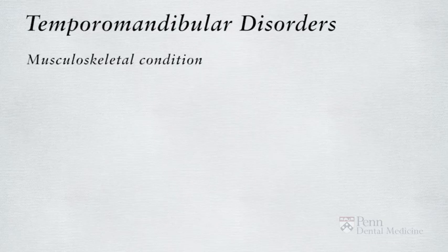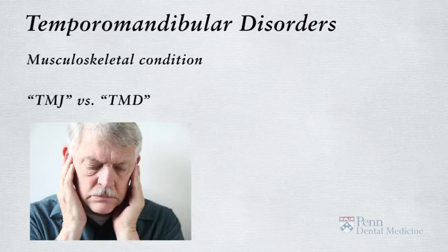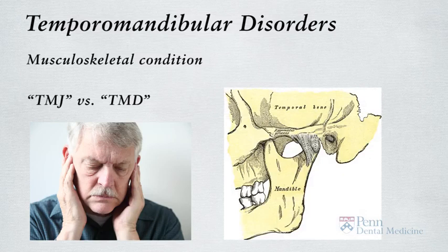TMDs are considered to be a musculoskeletal disorder. It is important to understand the terms TMJ and TMD. Many patients who have pain, clicking sounds, and dysfunction associated with their jaw joint will say they have TMJ. The term TMJ is used inappropriately, as it identifies an anatomical structure, much like saying I have an ankle, knee, or elbow. The more appropriate term is TMD, which reflects a disorder affecting any or all components of the TMJ complex and its associated structures. This is an excellent opportunity to educate your patient regarding appropriate use of these terms.